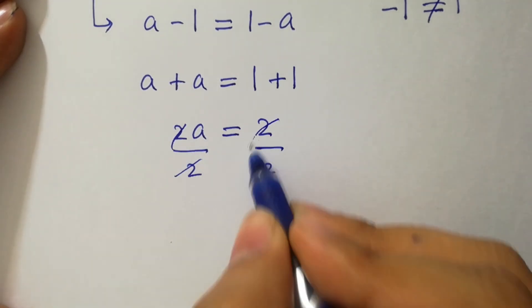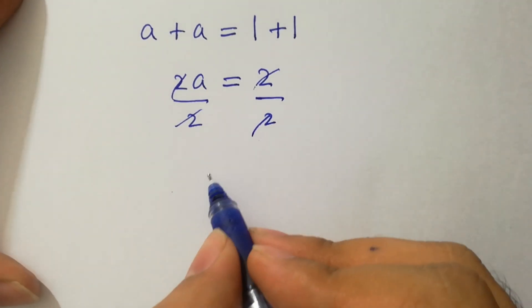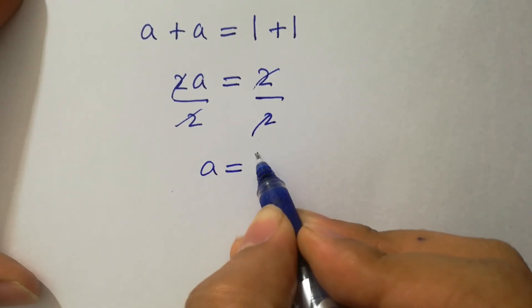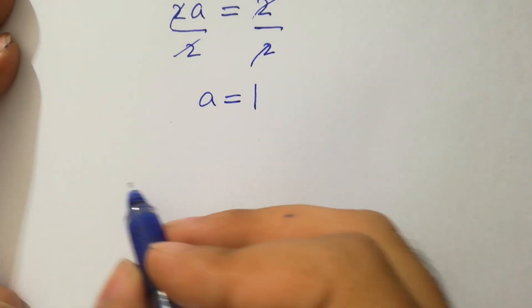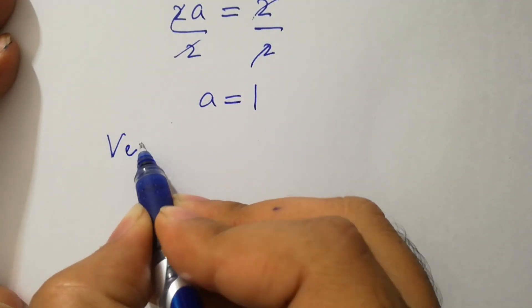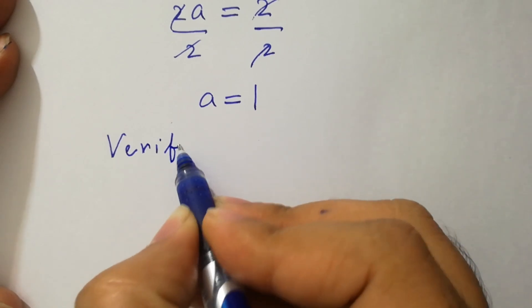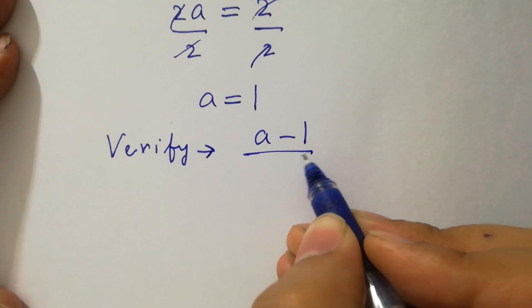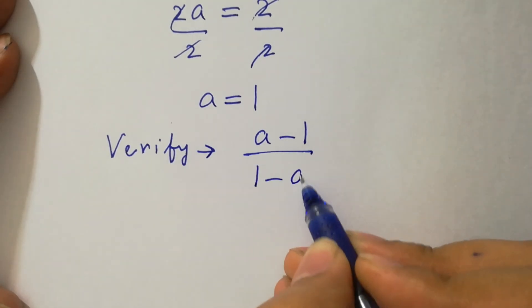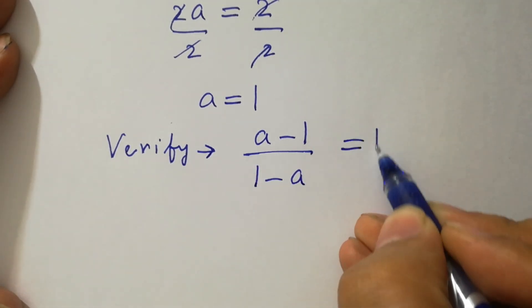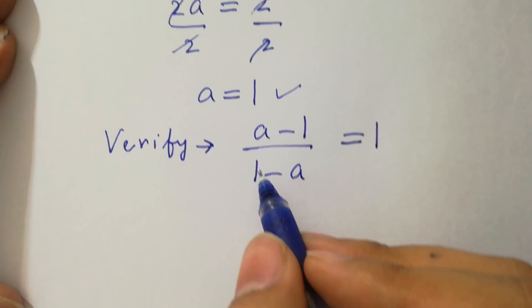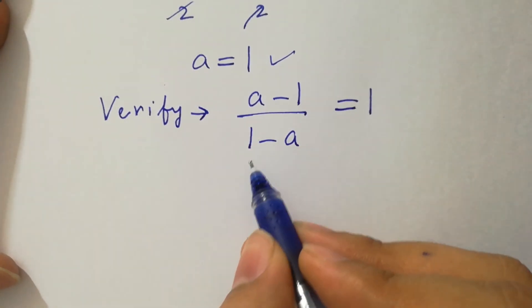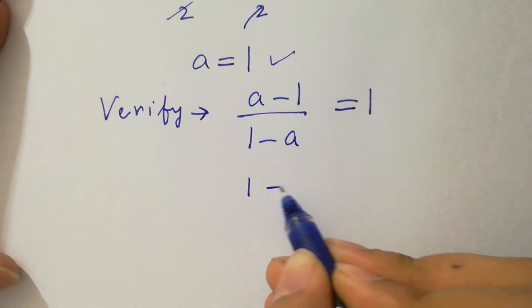Where 2 cancels, we have a = 1. Let's verify: (a-1)/(1-a) = 1. Put the value of a which is 1, we have 1-1...